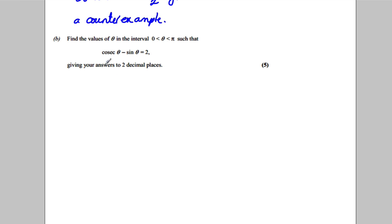So let's start off with what it means. Cosec means one over sine θ. So we have 1/sin θ - sin θ = 2. Multiply everything through by sin θ because I don't like that on the denominator. I have 1 - sin²θ = 2 sin θ.